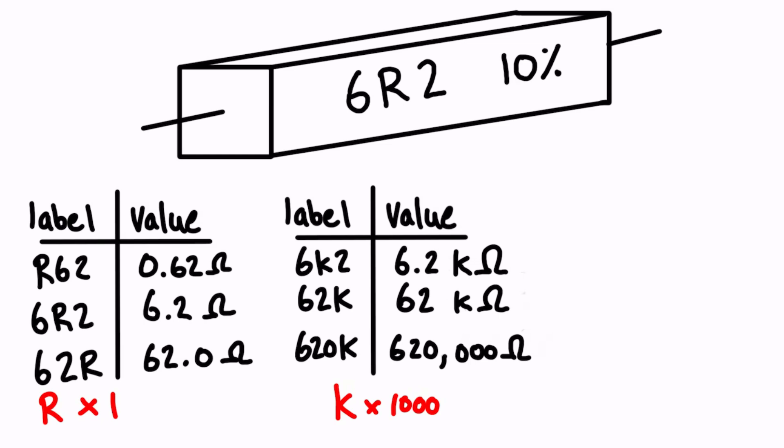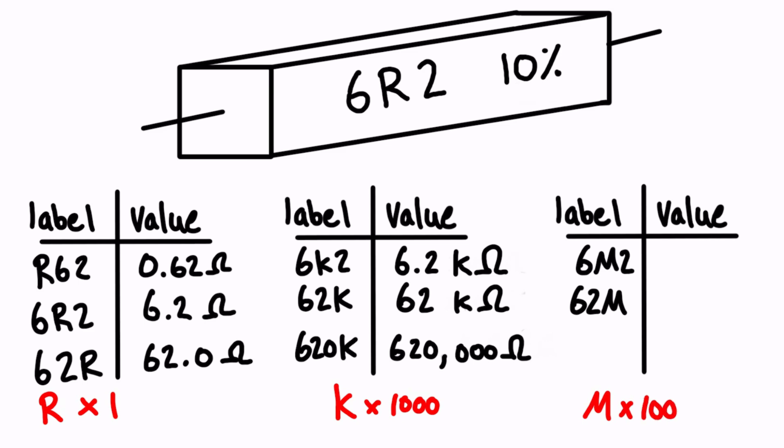Alright, let's run through the other example where we have the capital letter M, and M is a multiplier of a million, so times 10 to the 6. So when we look at this 6M2, that is 6.2 times 10 to the 6 ohms. If you wanted to, it's totally okay to write this as mega ohms. So you could also write this as capital M ohms. Again, that's why they use the M—it refers to mega.